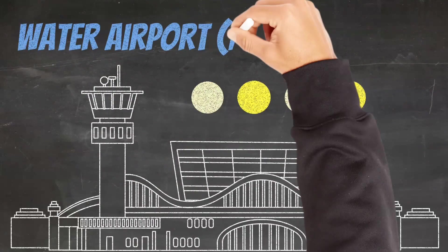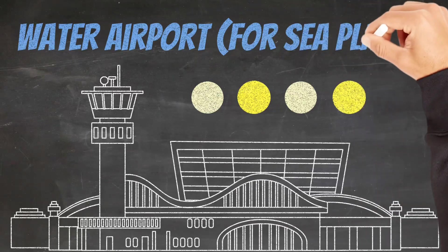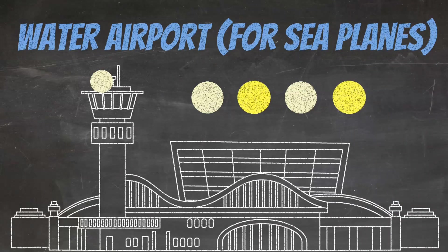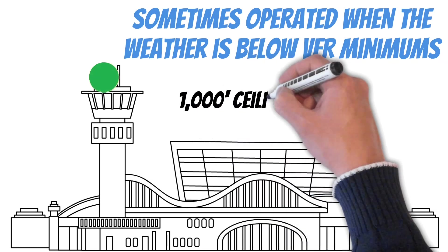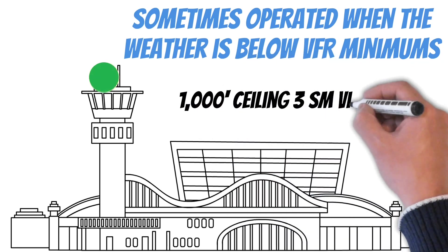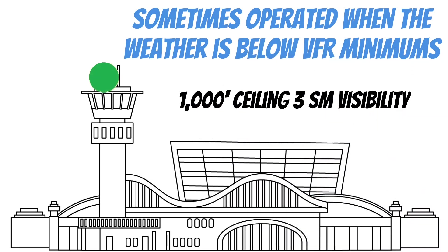Last but not least, alternating white and yellow lights indicate a water airport for seaplanes. While there's no requirement for them to do it, some airports operate their beacon when the weather is below VFR minimums. When they do this, they typically use the general VFR weather minimums of a thousand-foot ceiling and three statute miles visibility.